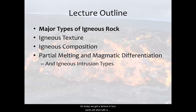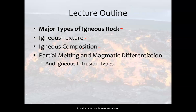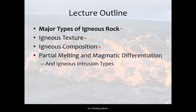Today we've got a lecture in four parts. We'll start with the major types of igneous rock that you'll want to remember. Then we'll focus on igneous texture — that first variable — and then later we'll focus on composition, the second variable, and the things that control each of those. These are variables we can see, and we'll think about those as observations. We will also think about the interpretations we make based on those observations. Lastly, we'll look at partial melting, magmatic differentiation, and igneous intrusion types, and really expand how we're thinking about igneous rocks.